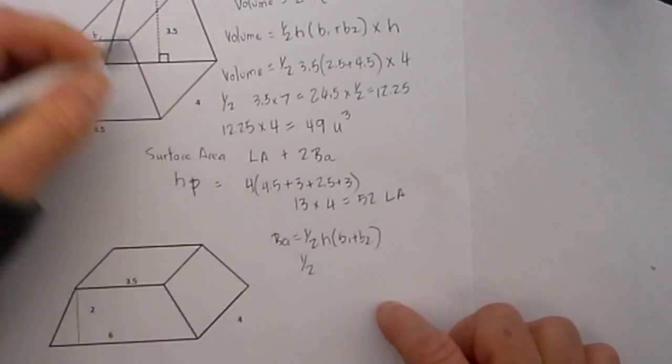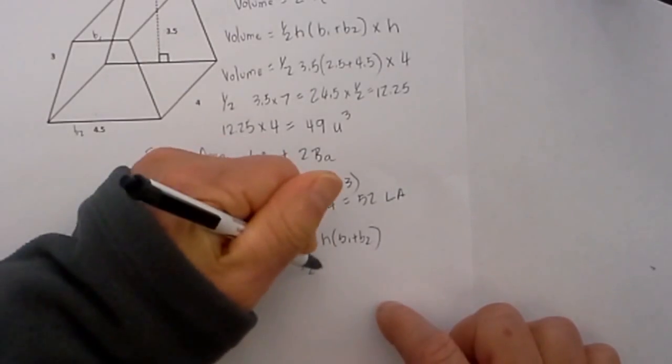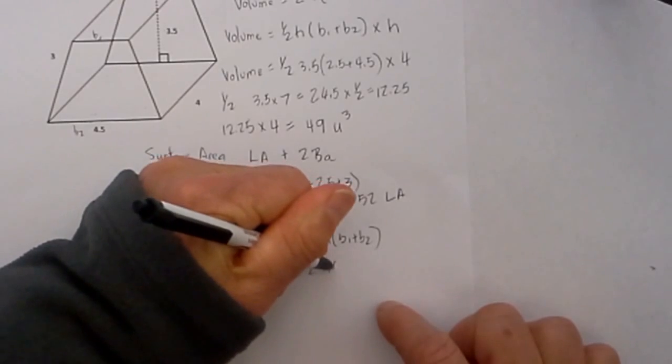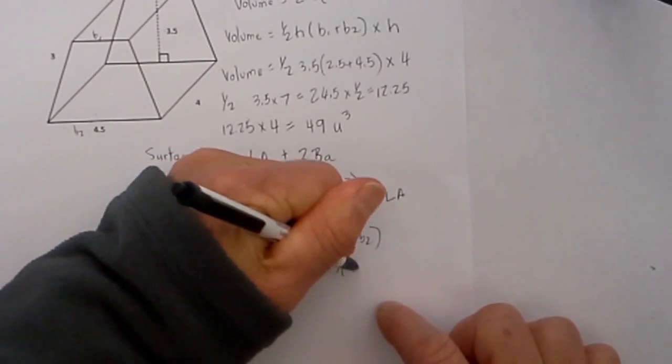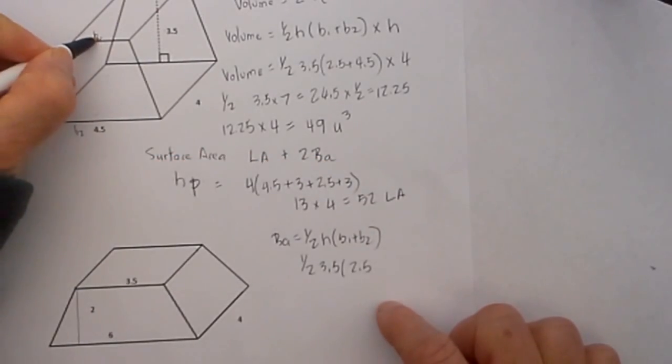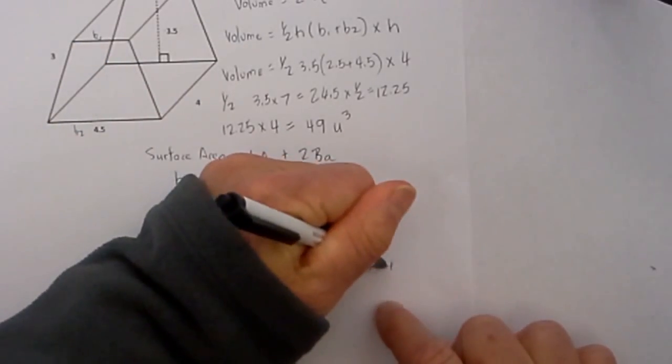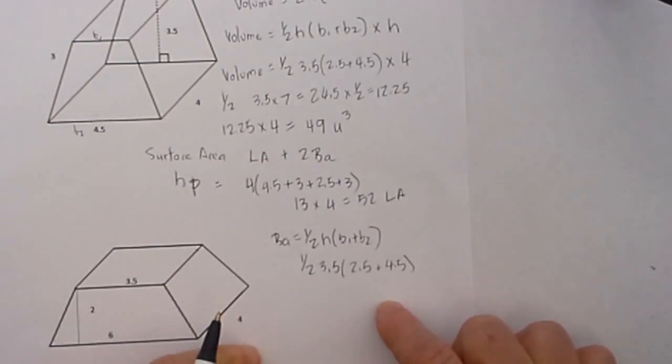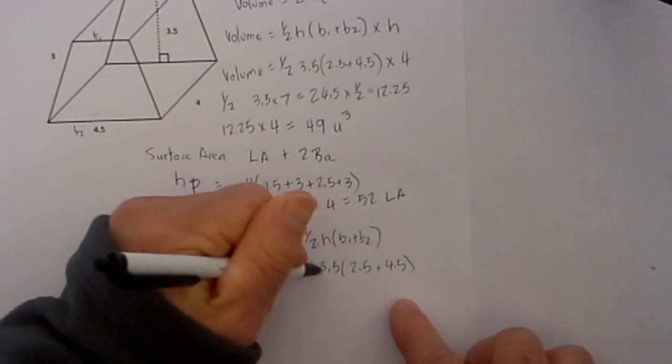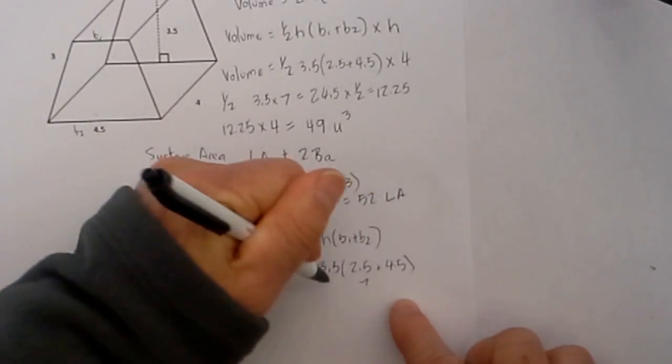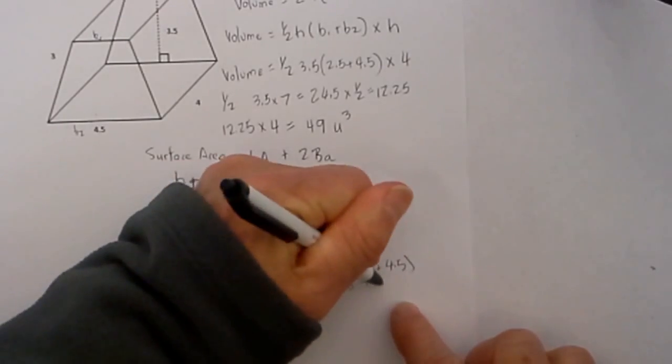And so 1/2 the height of the trapezoid is 3.5 times 2.5, which is from this length right here, plus 4.5, which is the other length.